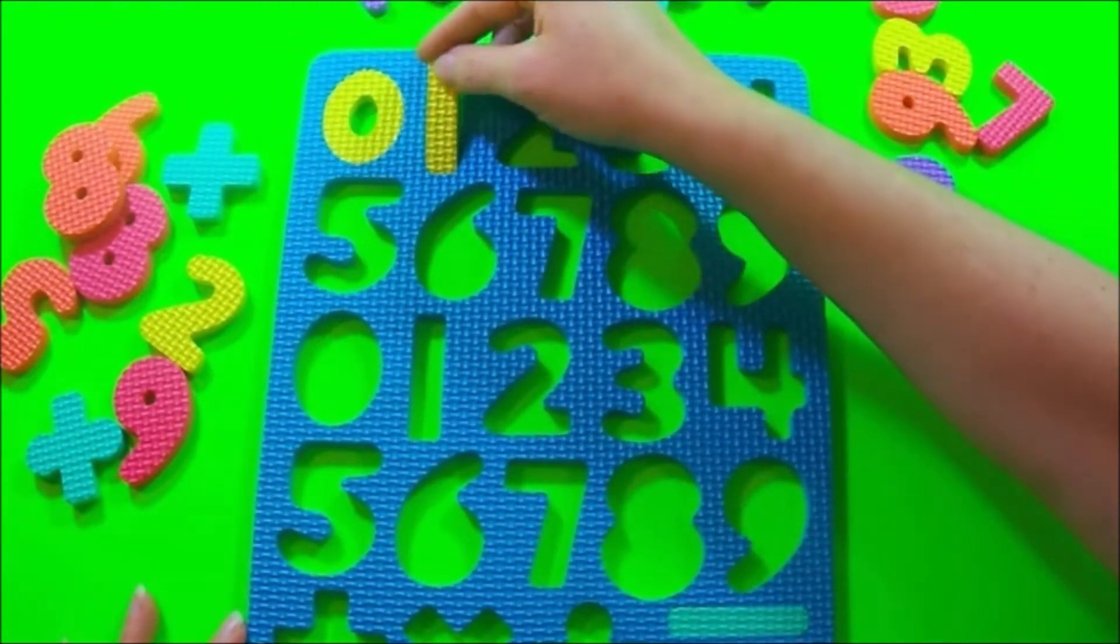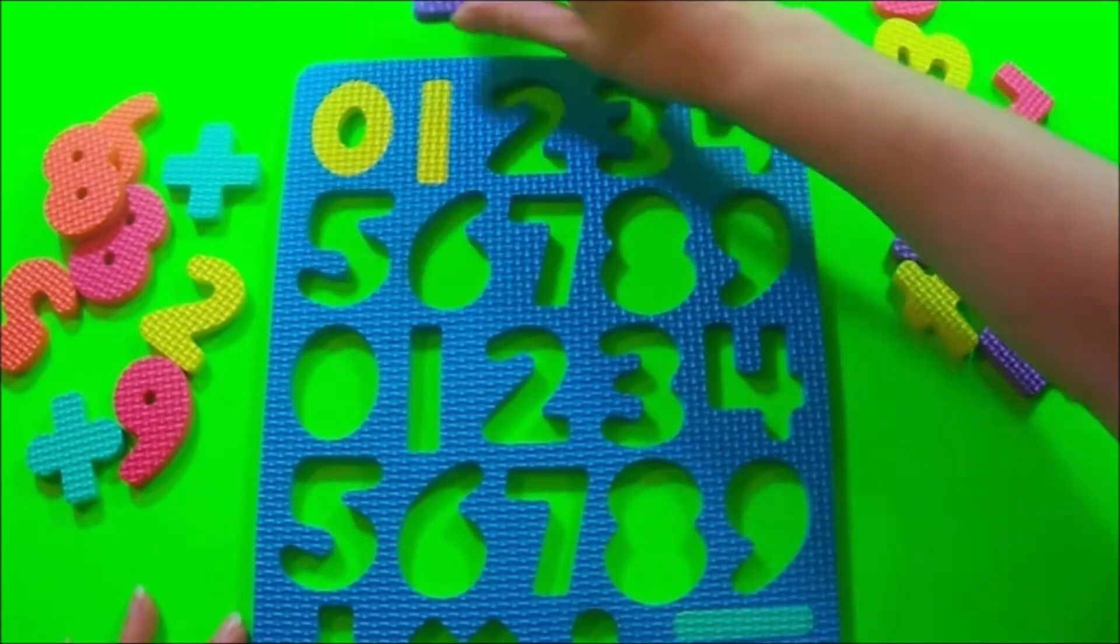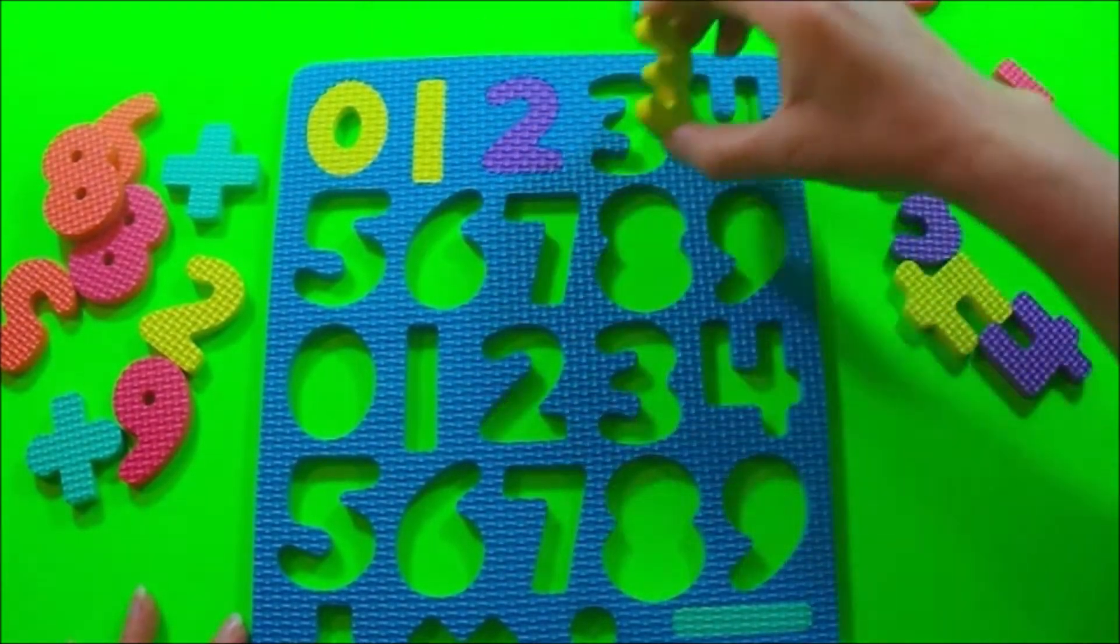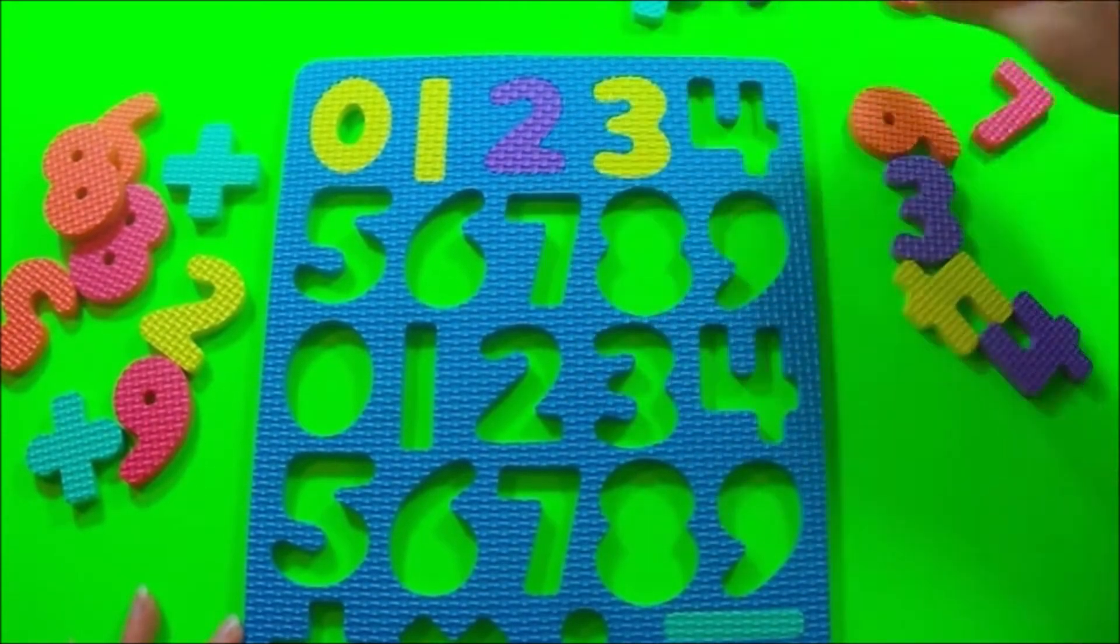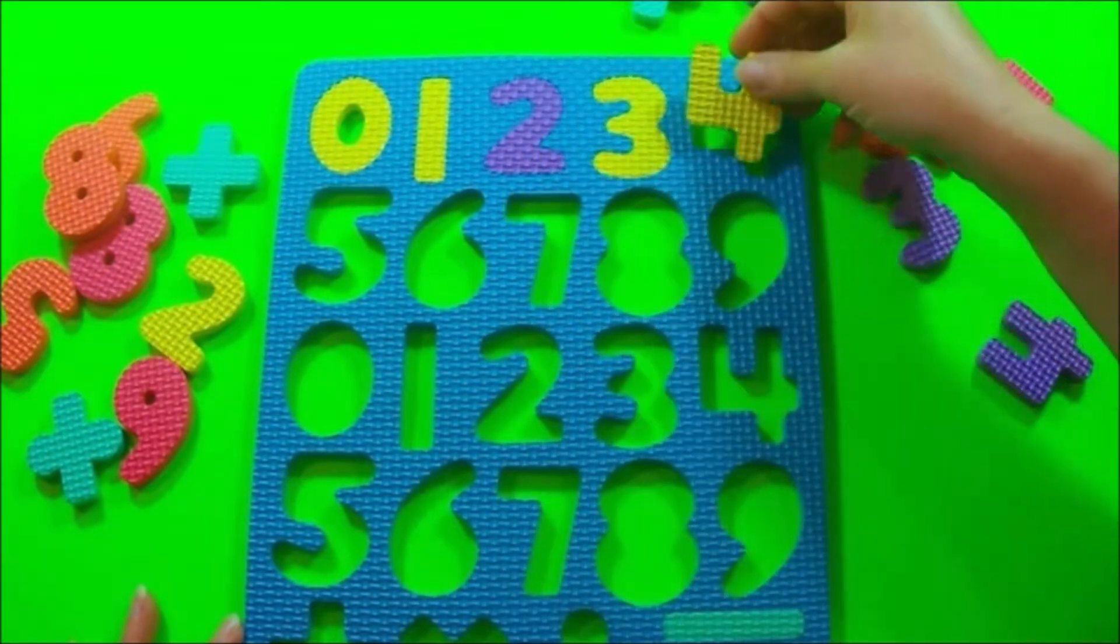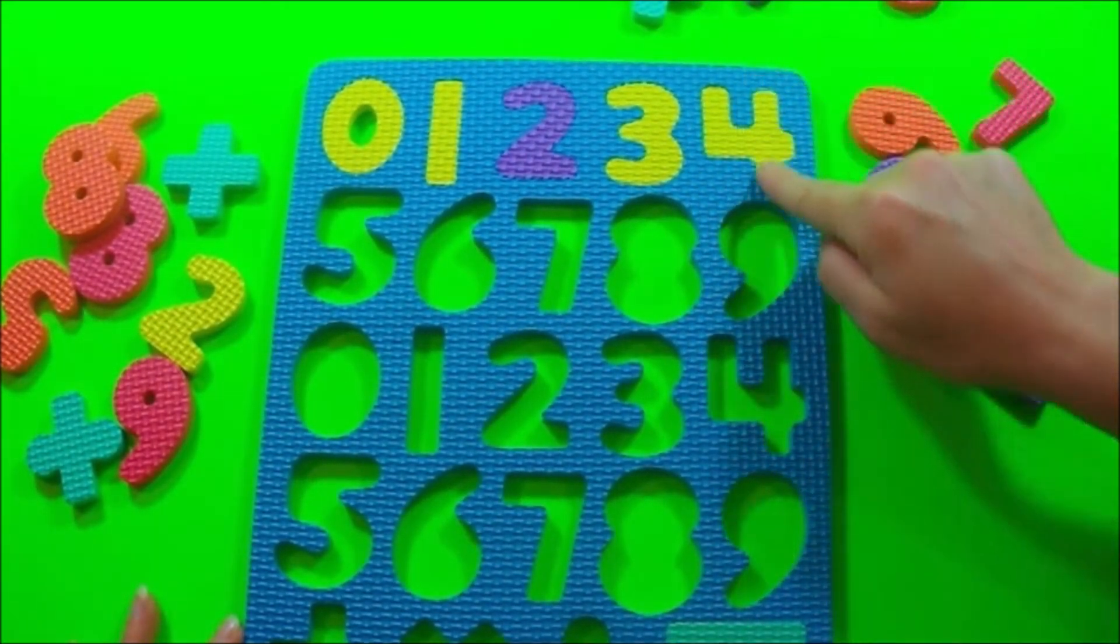There's one. Zero, one, two, three. Where's the number four? Four. First you go down and then across and down.